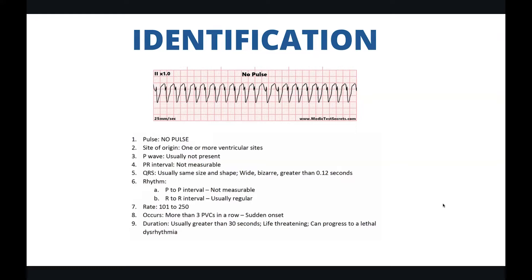The rate is between 101 and 250. If you see this rhythm, you can have a normal rhythm like a sinus tachycardia, and then if you see three PVCs in a row with a sudden onset, that could be a run of ventricular tachycardia if it terminates. However, if it doesn't terminate, then it is just pulseless ventricular tachycardia. If you check a pulse and you have no pulse, then you have pulseless ventricular tachycardia. The duration is usually greater than 30 seconds and this is life threatening. Ventricular tachycardia can progress to a lethal dysrhythmia, which is pulseless ventricular tachycardia.